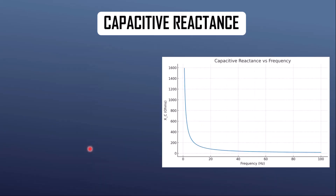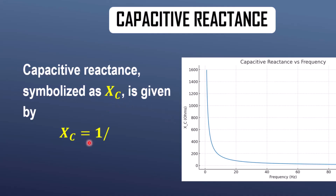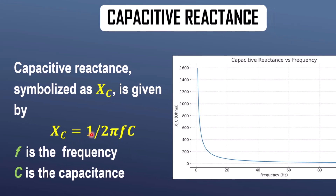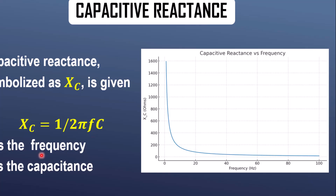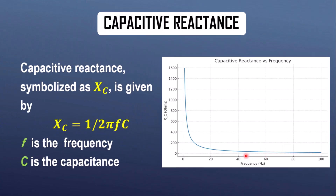Now let's see what is capacitive reactance. The capacitive reactance is symbolized by XC, and the formula is XC equals 1 over 2 pi FC. The capacitive reactance is inversely proportional to the frequency and the capacitance. On the graph you can see that as frequency increases, the capacitive reactance decreases — meaning at higher frequency it offers less reactance to the flow of electric current.